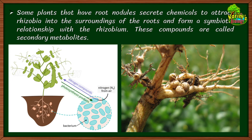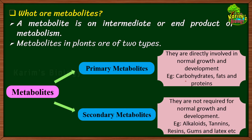Plants that have root nodules — the leguminous plants — must first attract rhizobium bacteria present in the surroundings. To attract rhizobium to the root, these leguminous plants secrete certain chemicals into the soil called secondary metabolites. These chemicals attract the bacteria, which then form root nodules and help in the synthesis and fixation of nitrogen for the plant.